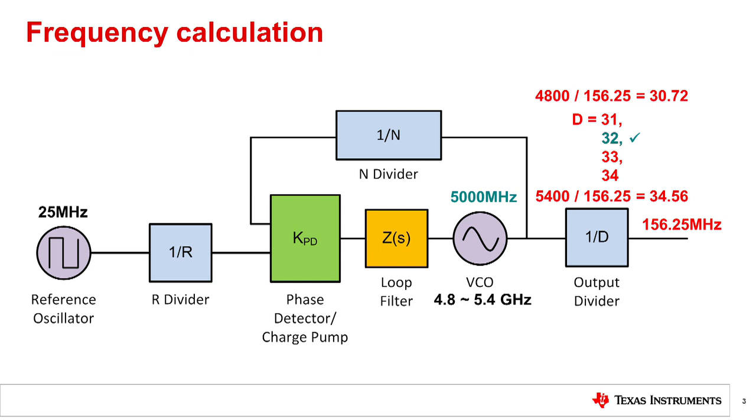Now let's go back to the input. In order to optimize our output phase noise, we want to set the phase detector frequency to the highest possible value. Therefore, set R equal to 1 and reference frequency into the phase detector becomes 25 MHz. The N divider is simply 5 GHz divided by 25 MHz, which is 200 in this case.